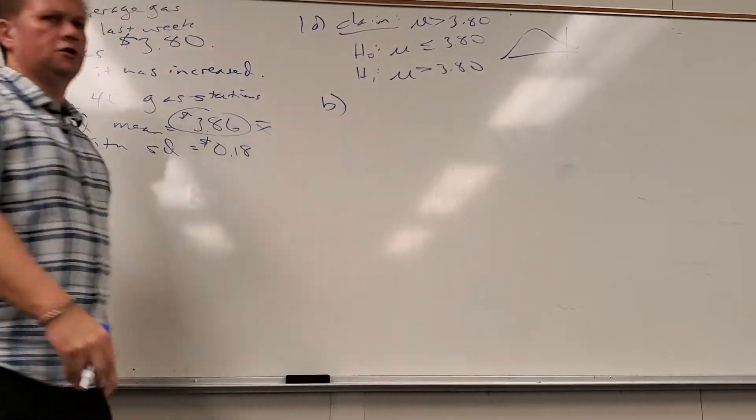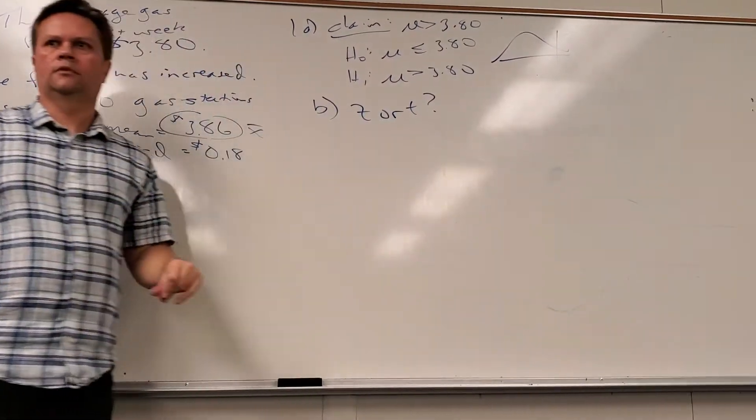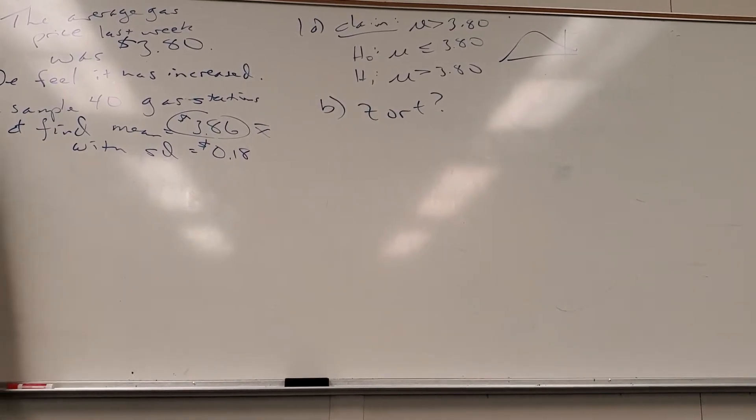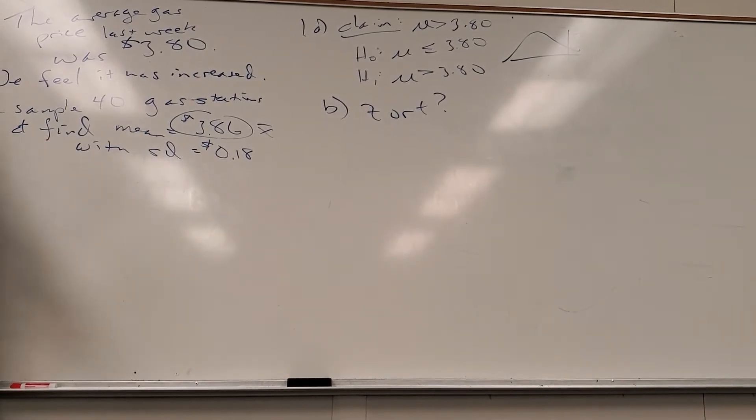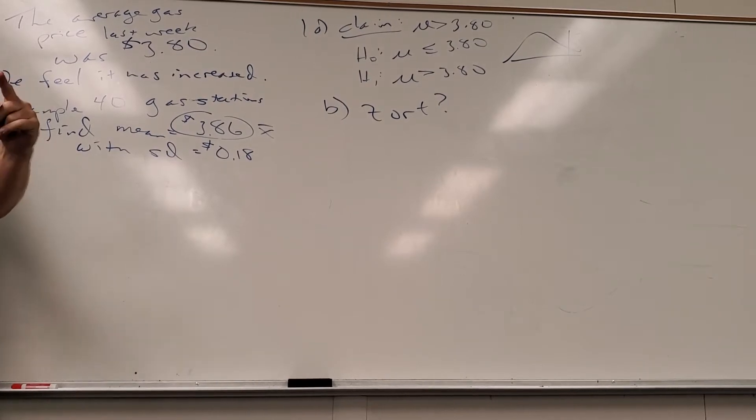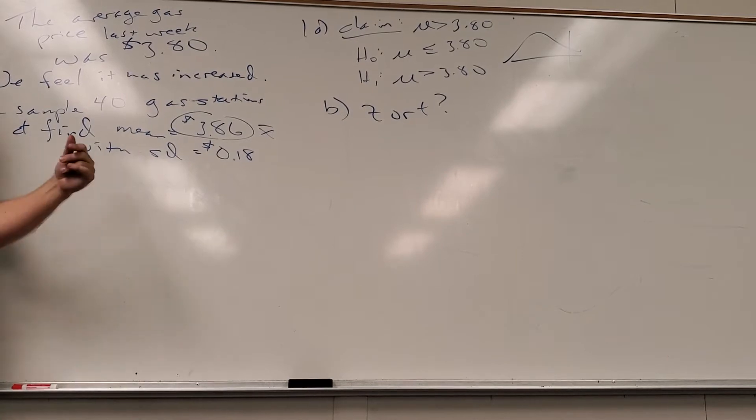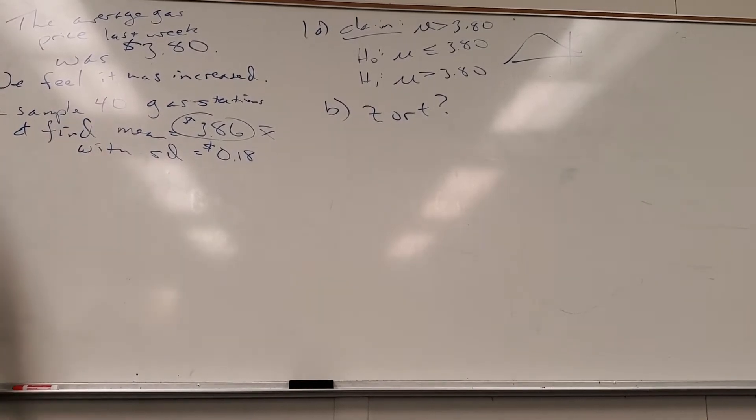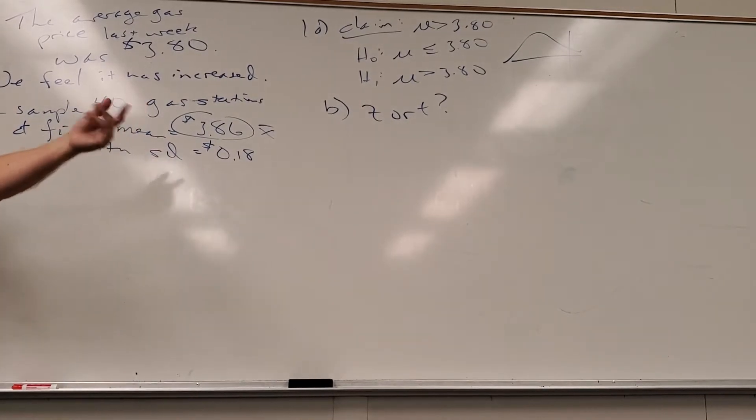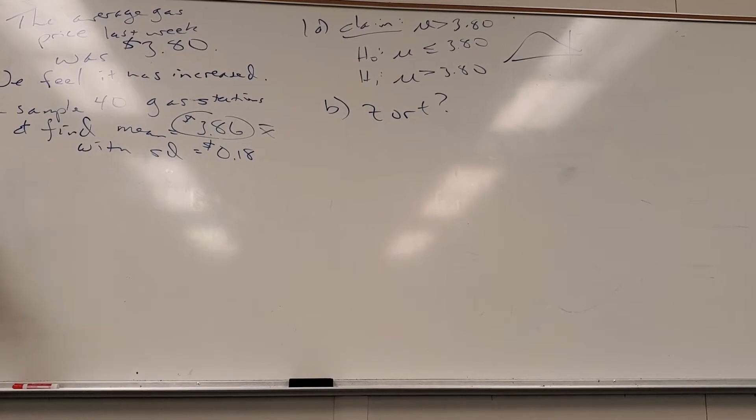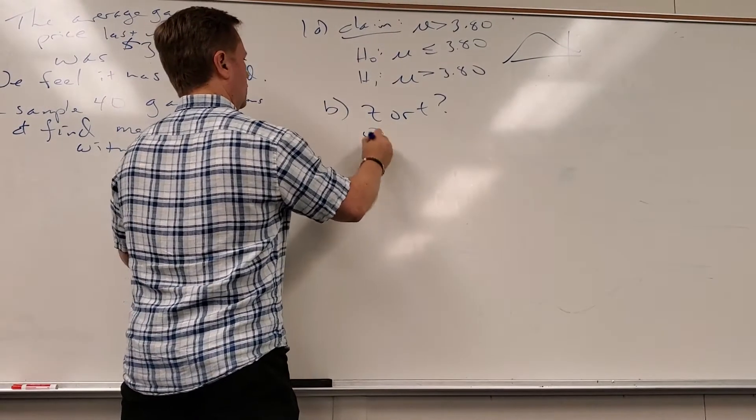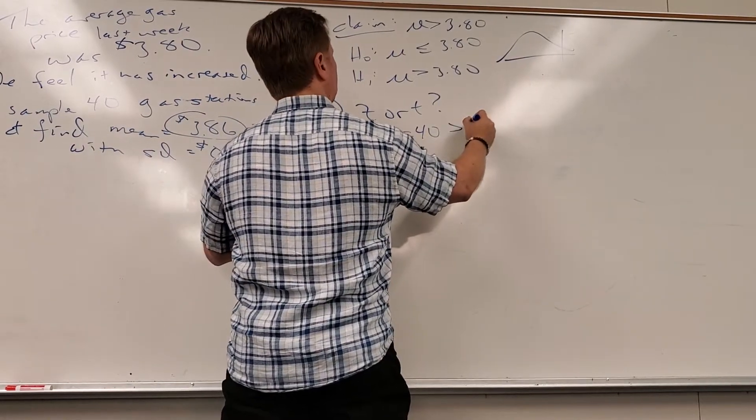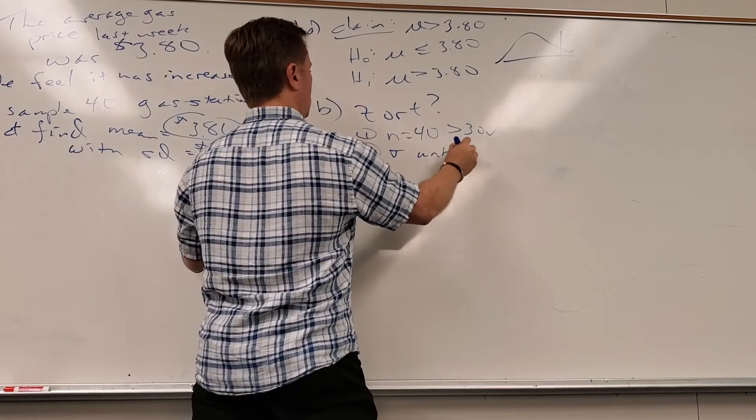And then part B, Z or T? Which one? I still get people that say we know the standard deviation, so Z. What distinguishes between Z and T is which standard deviation do we know - sigma or S? In this case, what do I know? Sample standard deviation, because it came from my sample. But what do I need even more important than that? N equals 40, which is greater than 30, so it's normal enough. Sigma unknown, so we have to use T.